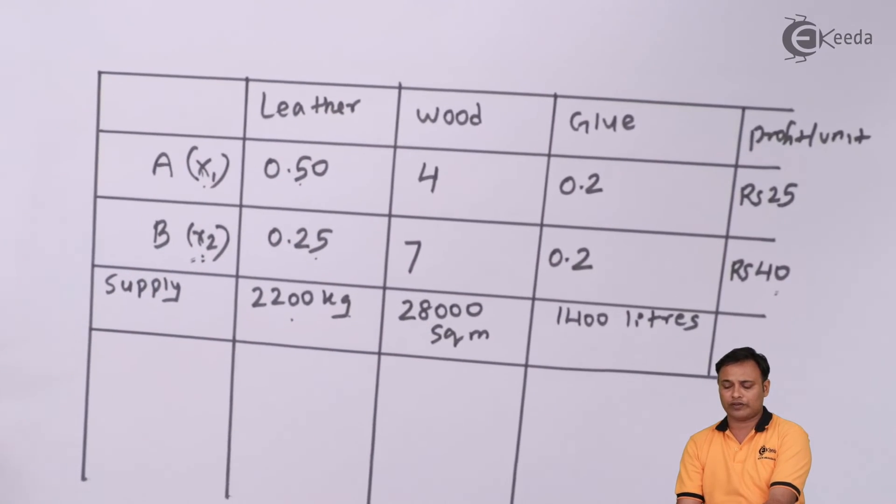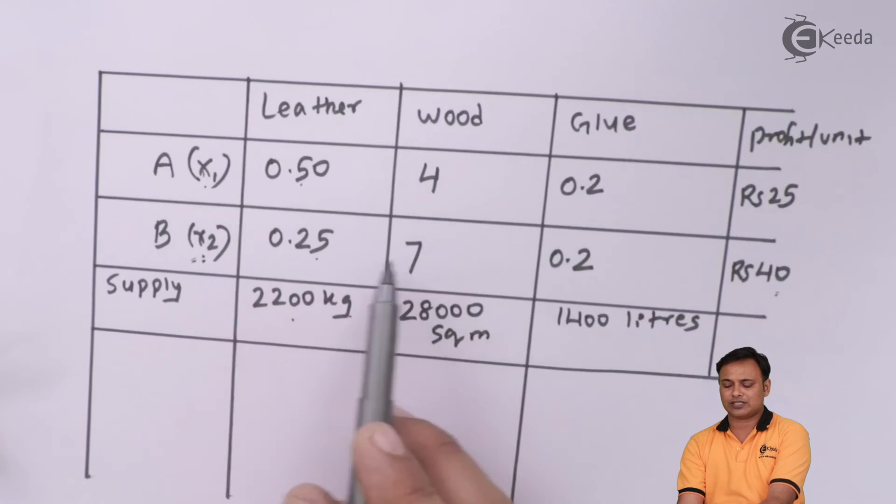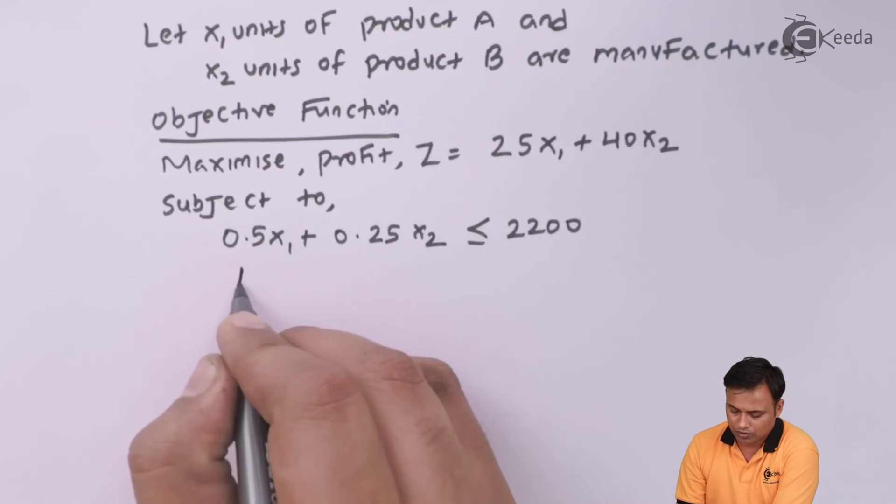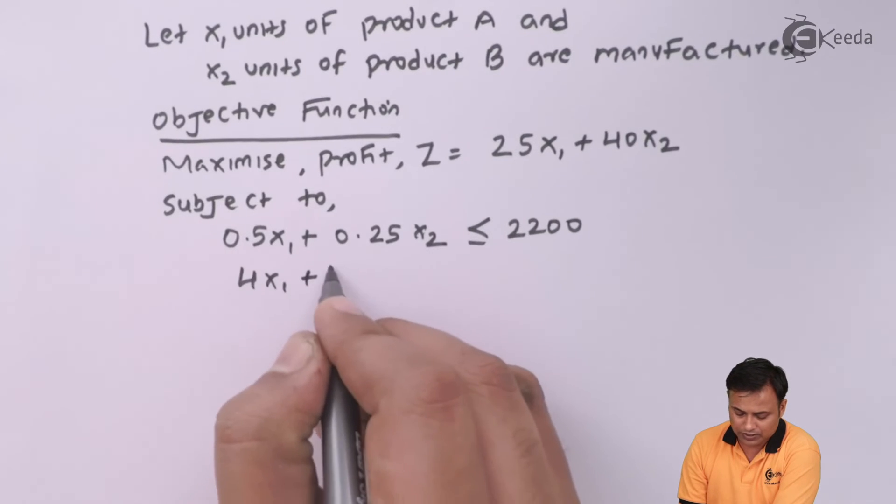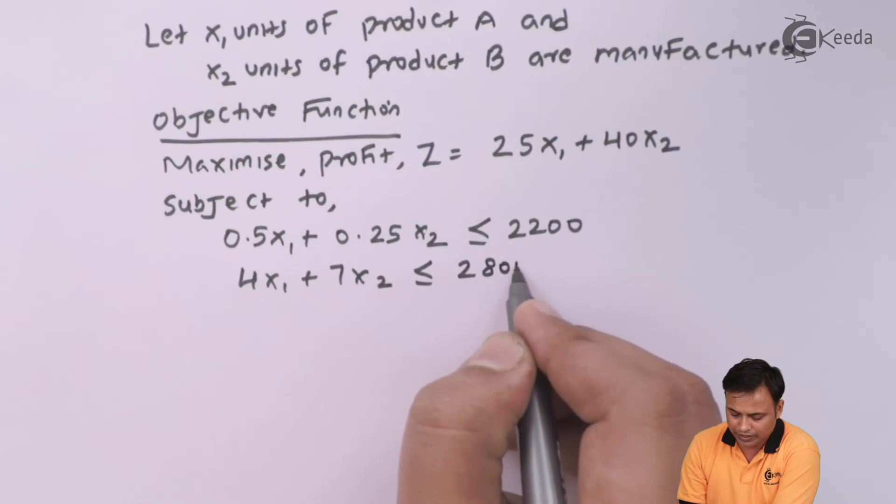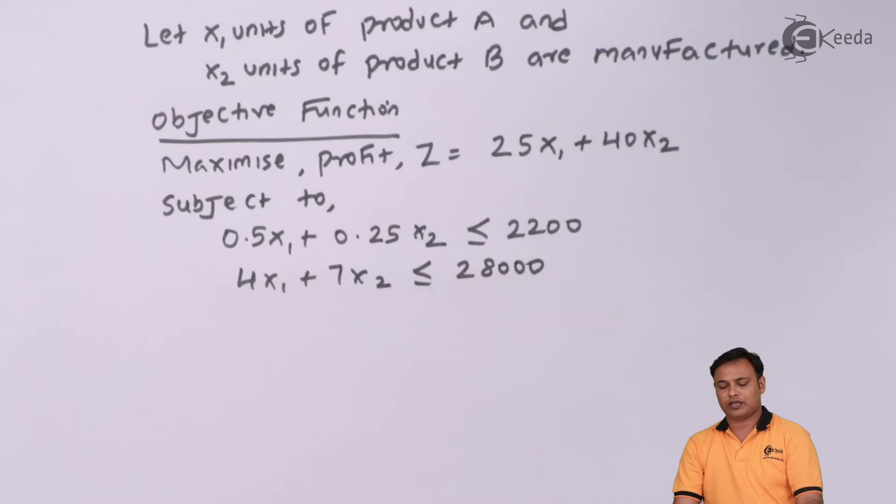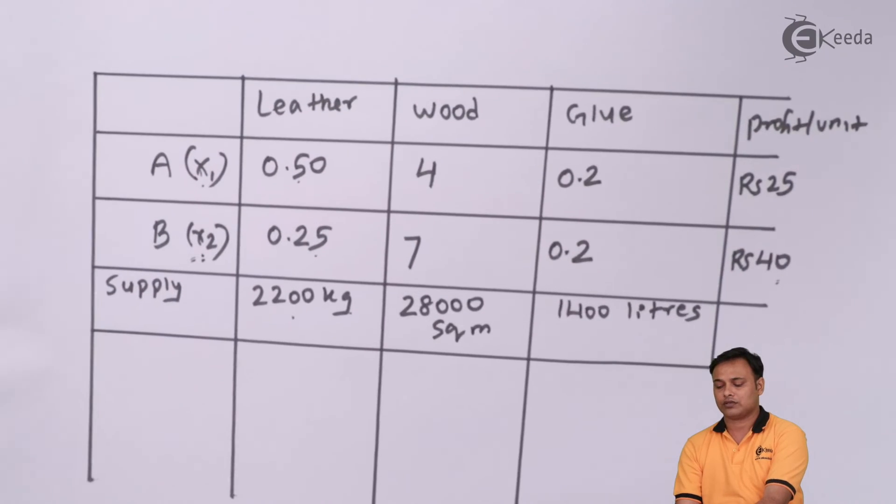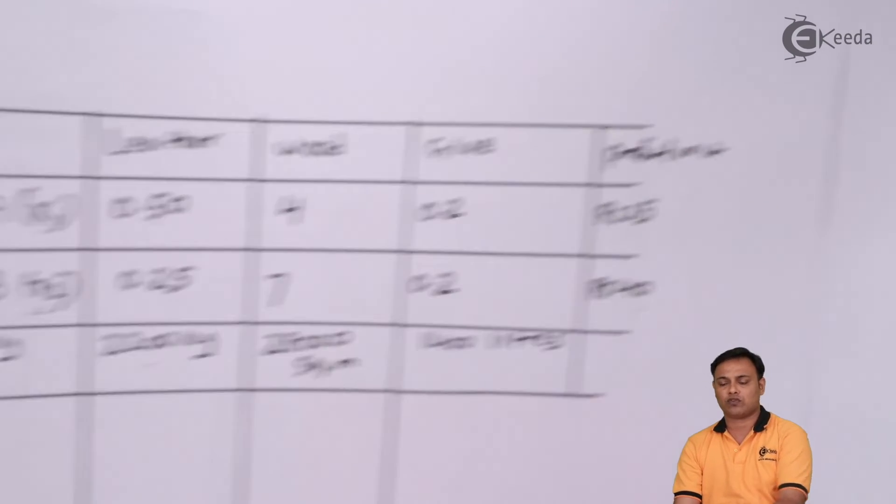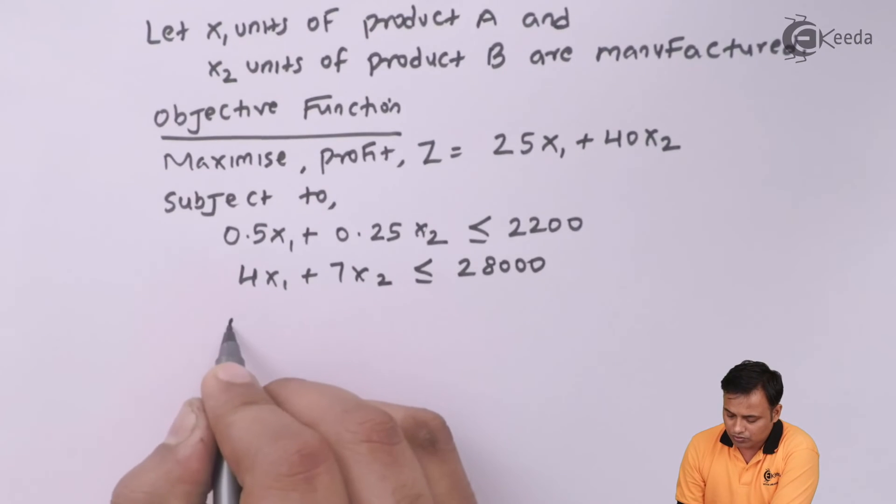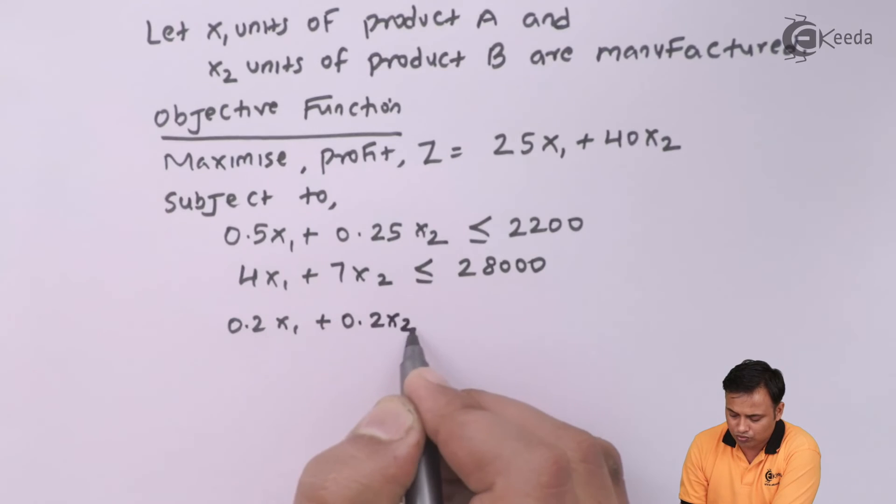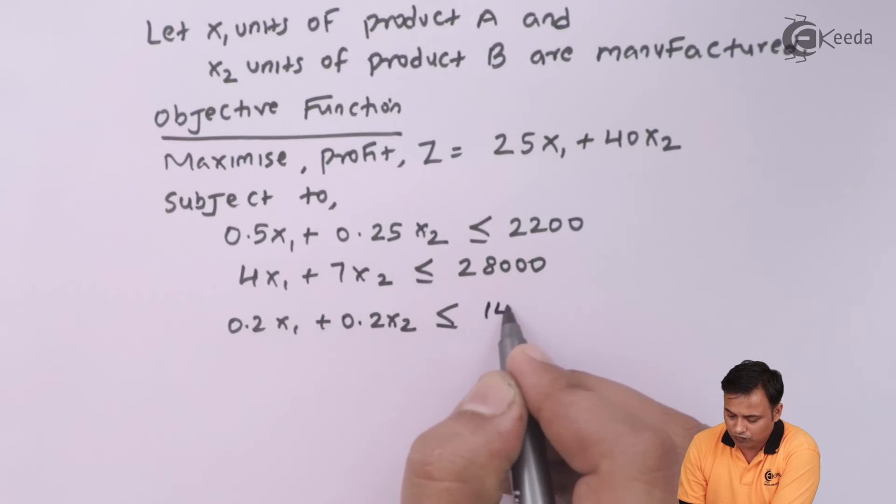For second resource wood, it will be 4x1 plus 7x2 less than equal to 28000. And in case of third, it will be 0.2x1 plus 0.2x2 less than equals to 1400.